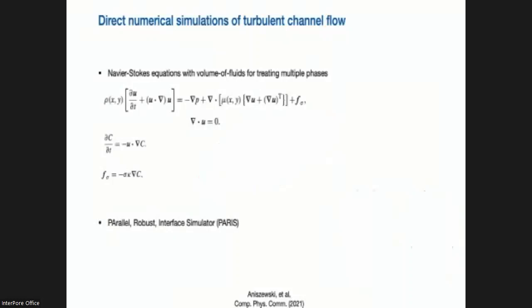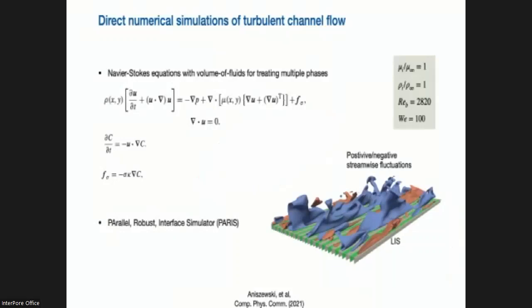So what we did this time was direct numerical simulation. So we solved the Navier-Stokes equations for multiple components using the volume of fluid formulation. And we use the code called Paris, which Stefan initiated some years ago. And this is a snapshot of how the turbulent flow of a surface from a simulation looks like, showing you the positive and negative fluctuations. And you can see the liquid in the surfaces and the interface here is moving and the contact angle is not pinned either.